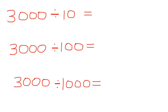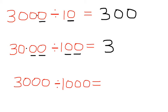3000 divided by 10. One zero, so count one digit, put the point. Answer is 300. 3000 divided by 100. Two zeros, count two digits, put the point. Answer is 30. 3000 divided by 1000. One, two, three—three zeros. So count three digits: one, two, three, and then put the point. Answer is 3.